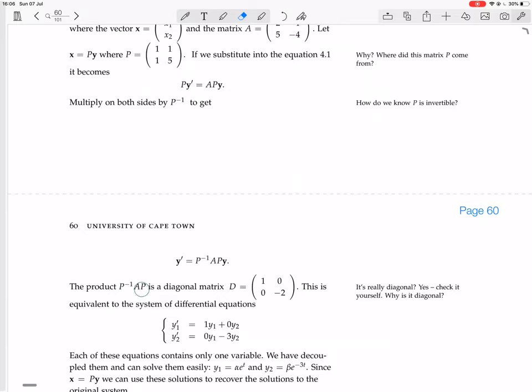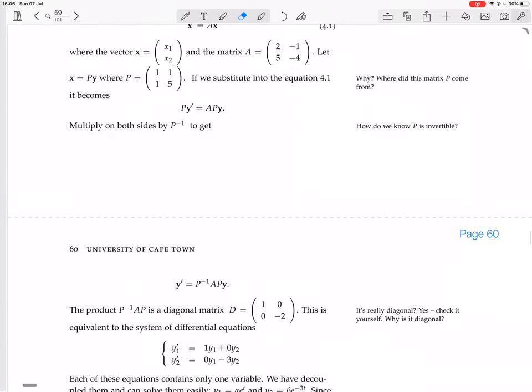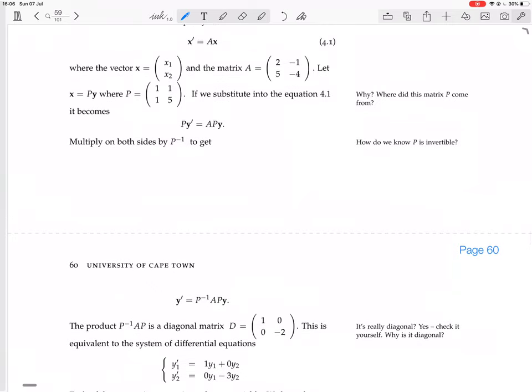Now we have the product P inverse AP, but that's actually a diagonal matrix. It says check it yourself. Okay, so P inverse times A times P. What is the inverse of P? So P is 1, 1, 1, 5, so the inverse will be 1 over the determinant, which is 5 minus 1, which is 4, so 1 over 4, times the transpose of the cofactor matrix. So the cofactor matrix would be, the cofactor of the top left is going to be 5. Bottom right would be 1, and these cofactors will be minus 1 and minus 1, because they're odd entries. Then you take the transpose of that, and it's actually the same as the thing itself because it's symmetric.